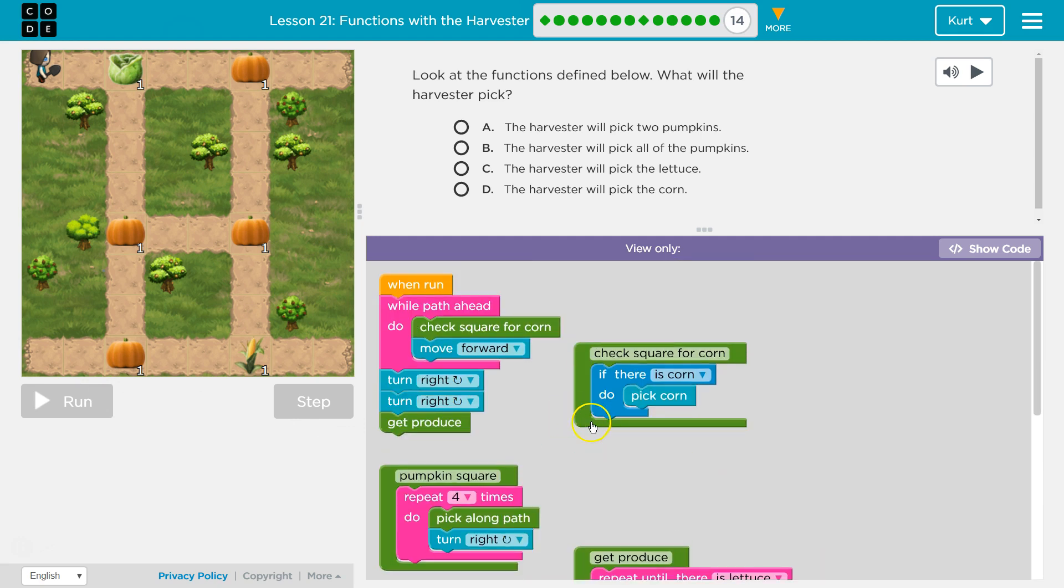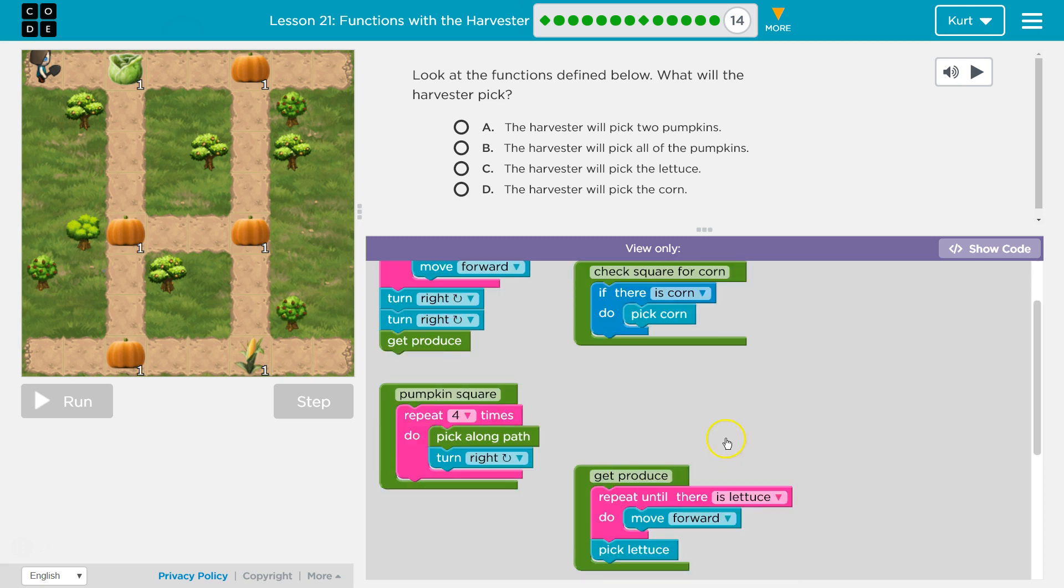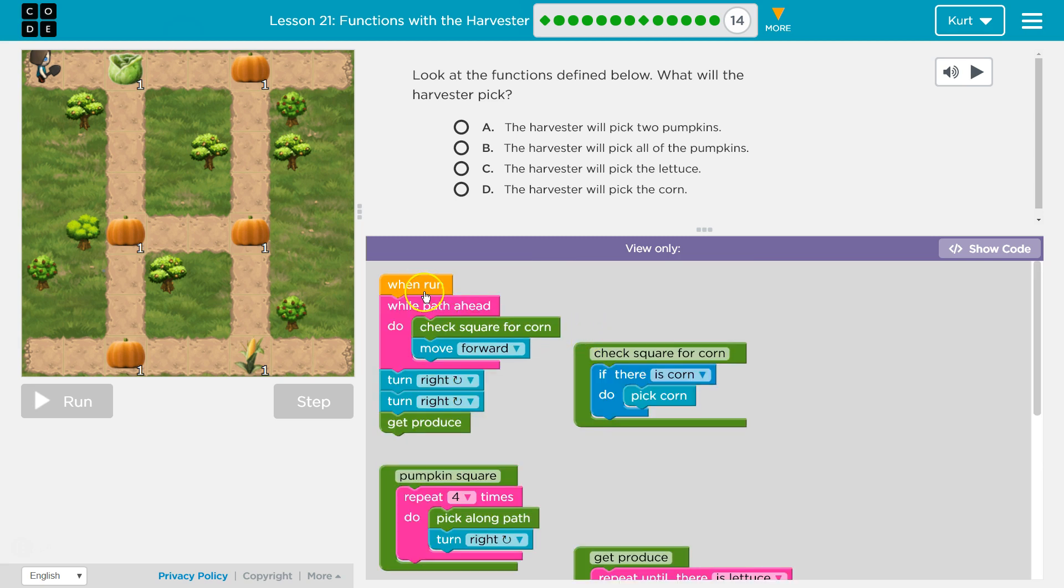There's a bunch of functions here. Check square for corn. When run with path ahead, where do I start? As long as there's a path ahead of me, I will check the square for corn and then move forward. Let's see what check square for corn is. I check for corn. If there is corn, pick the corn. If not, if there's no corn, I don't pick. I just hit the bottom. Then I'm going to move forward and hit the bottom of my loop.